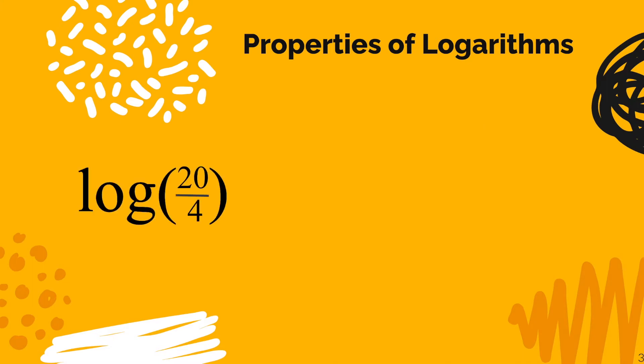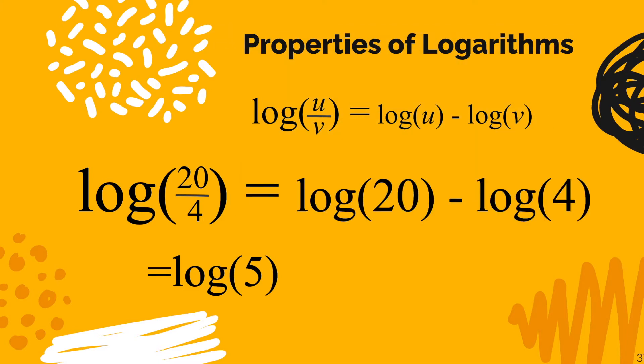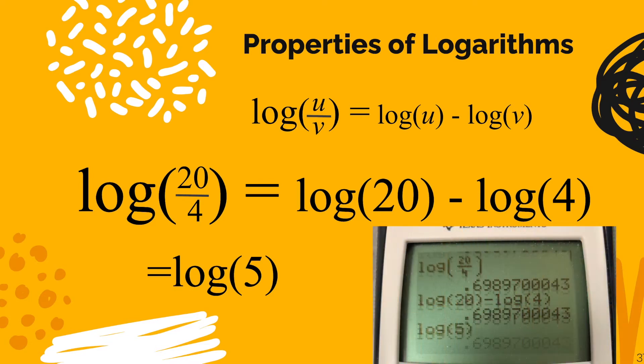Let's take a look at an example with actual numbers. Here we have log 20 over 4. Now I know that 20 over 4 is just 5 so log 5 we could type that in our calculator and get the decimal. But I wanted to prove to you that it's okay to use this property of logarithms where we actually subtract two separate logs. So in the calculator we could type log 20 minus log 4. And here you see the calculator where you get the same decimal in all three cases log 20 over 4, log 5 and log 20 minus log 4. They are the same value. So therefore this is a perfectly legal move as I like to call it in algebra to go ahead and separate the logs with a minus sign.